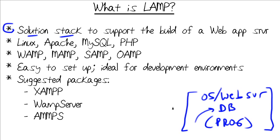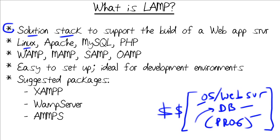Now, many companies who want to develop a web app don't have the money to invest in a proprietary solution. For instance, a Microsoft solution is going to require SQL Server licensing, Visual Studio licensing, not to mention the Windows Server licensing — and I'm probably forgetting some more licenses in there. That can add up quite a bit. In the open source world, we have operating systems like the Linux distributions, and we have the world-leading web server software,